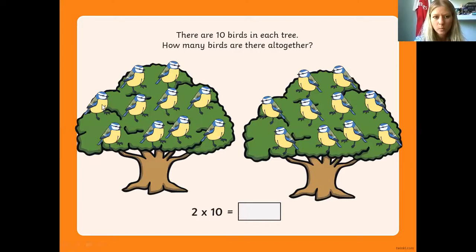So we've got 1, 2, 3, 4, 5, 6, 7, 8, 9, 10, 11, 12, 13, 14, 15, 16, 17, 18, 19, 20. So 10 plus 10 is 20. But you could also say 2 for the trees times 10 for the birds equals 20.